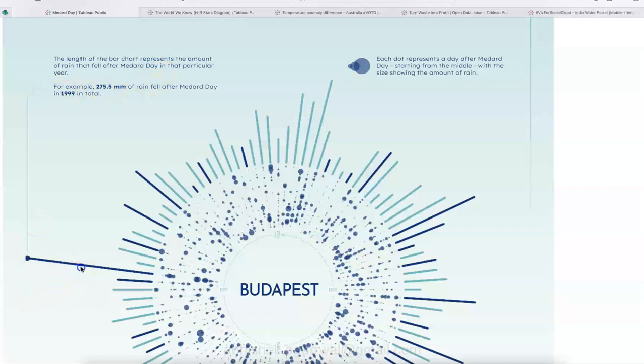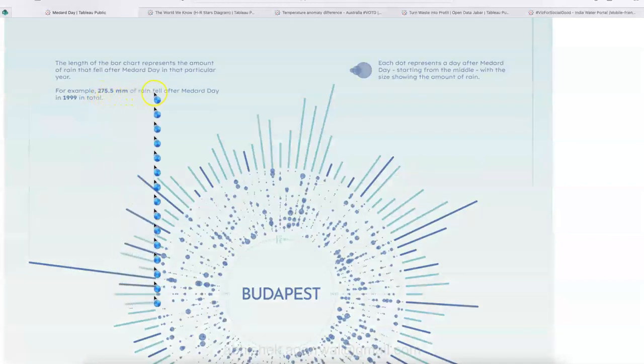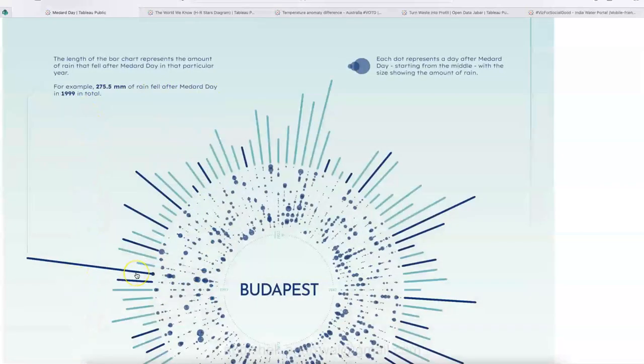So the length of the bar represents the amount of rain fell after Medard Day in that particular year. As an example, 275.55 mm of rain fell after Medard Day in 1999.